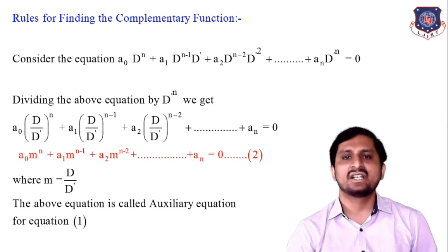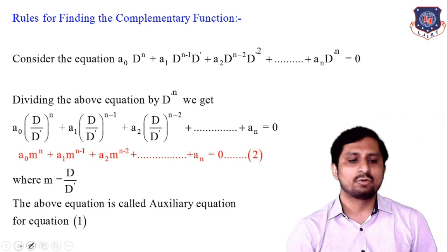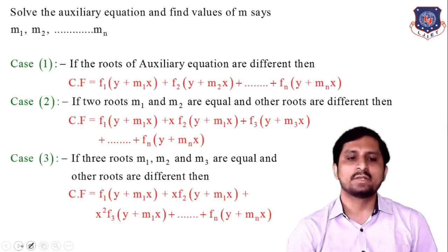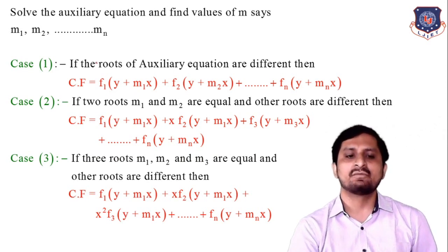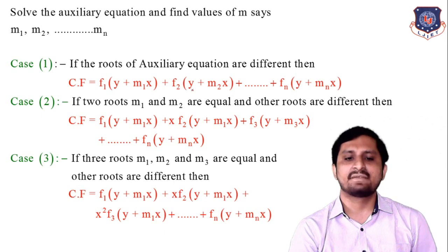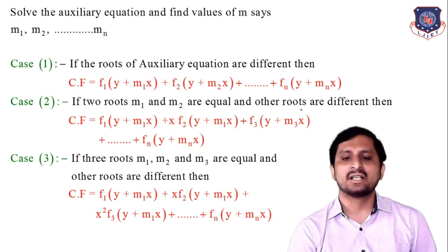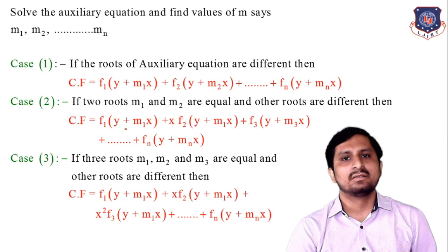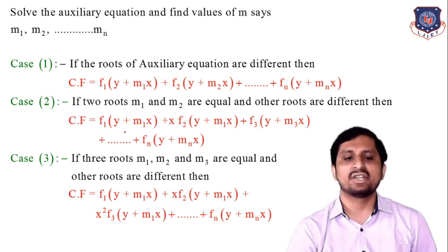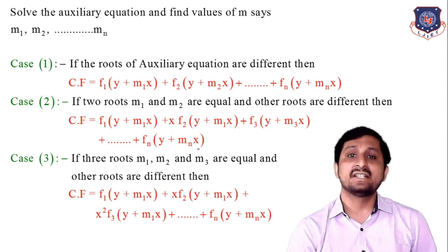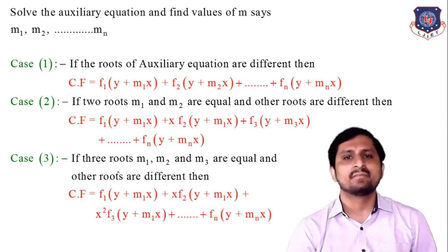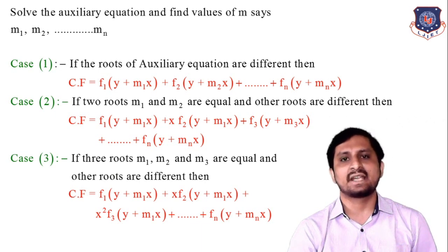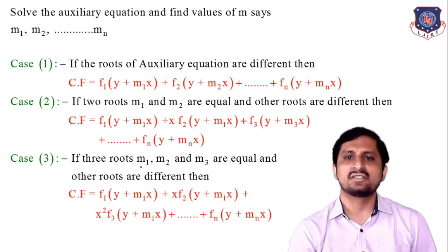Let's take a quick revision. You have to remember this formula to find the complementary function. If your roots of the auxiliary equation are different, then the complementary function is f1(y + m1·x) + f2(y + m2·x) + ... + fn(y + mn·x). If two roots m1 and m2 are equal and other roots are different, the CF is f1(y + m1·x) + x·f2(y + m1·x) and distinct roots written as usual. If three roots are equal, then CF is f1(y + m1·x) + x·f2(y + m1·x) + x²·f3(y + m1·x), and from m4 onward, distinct roots are written as is.